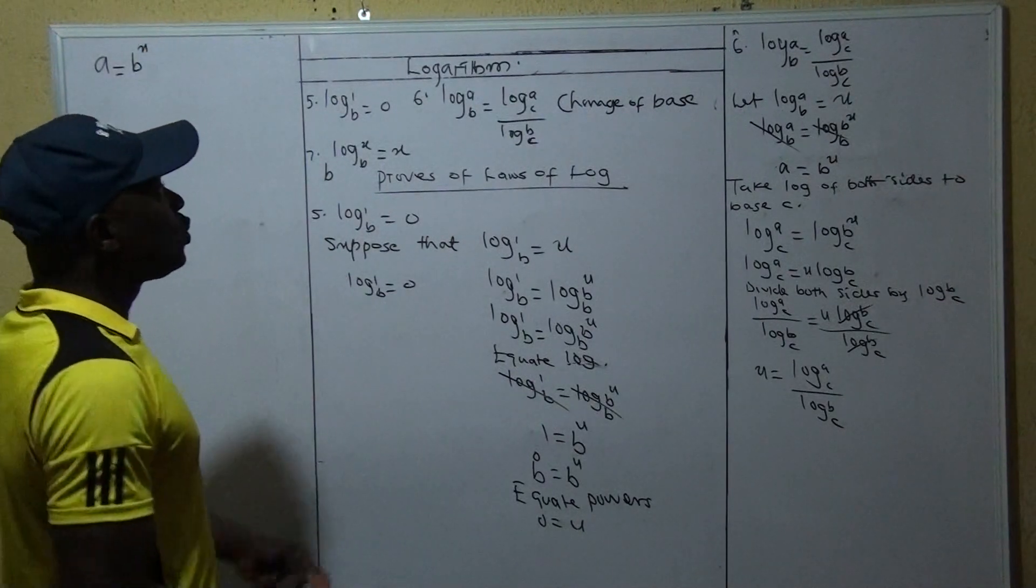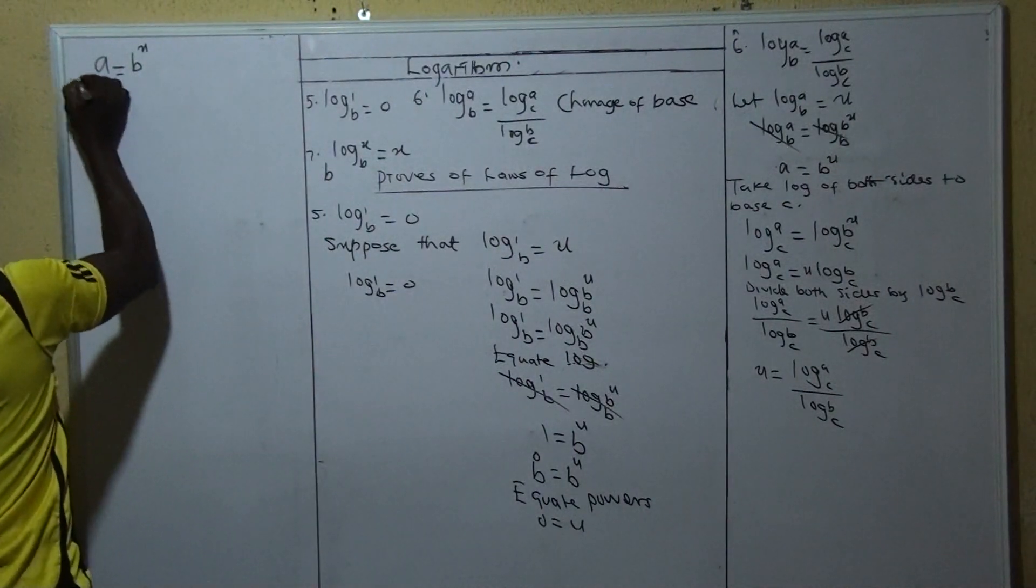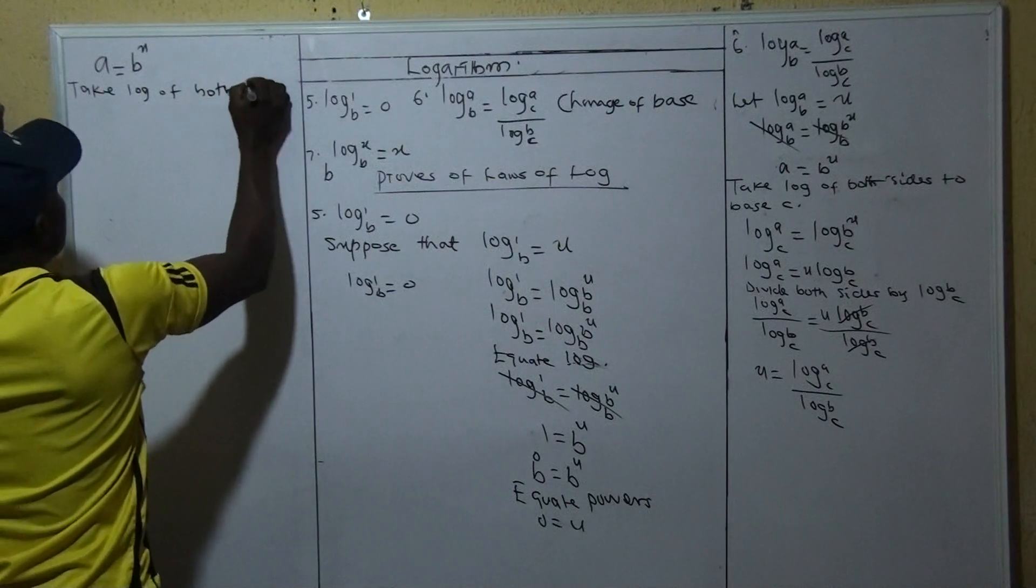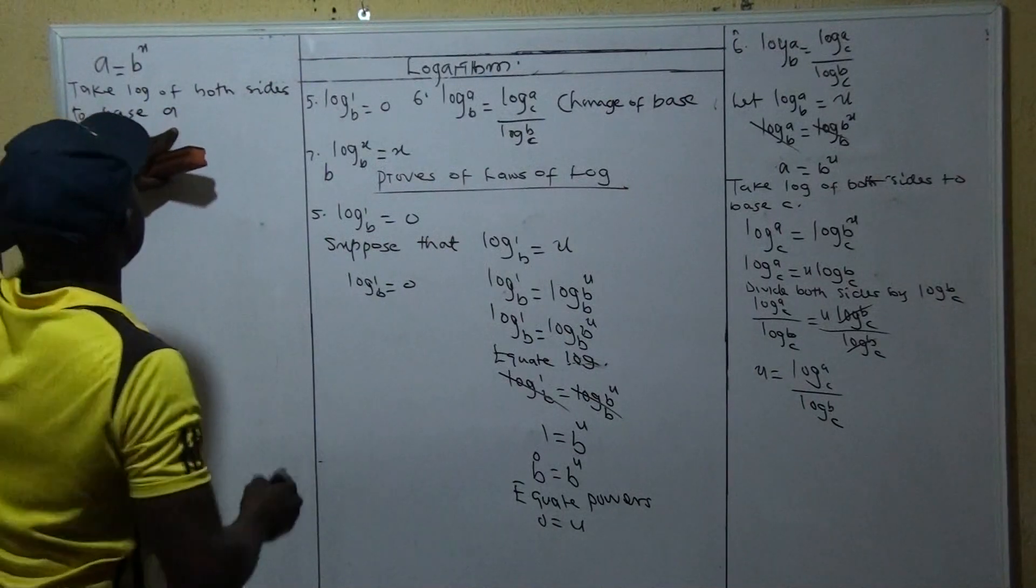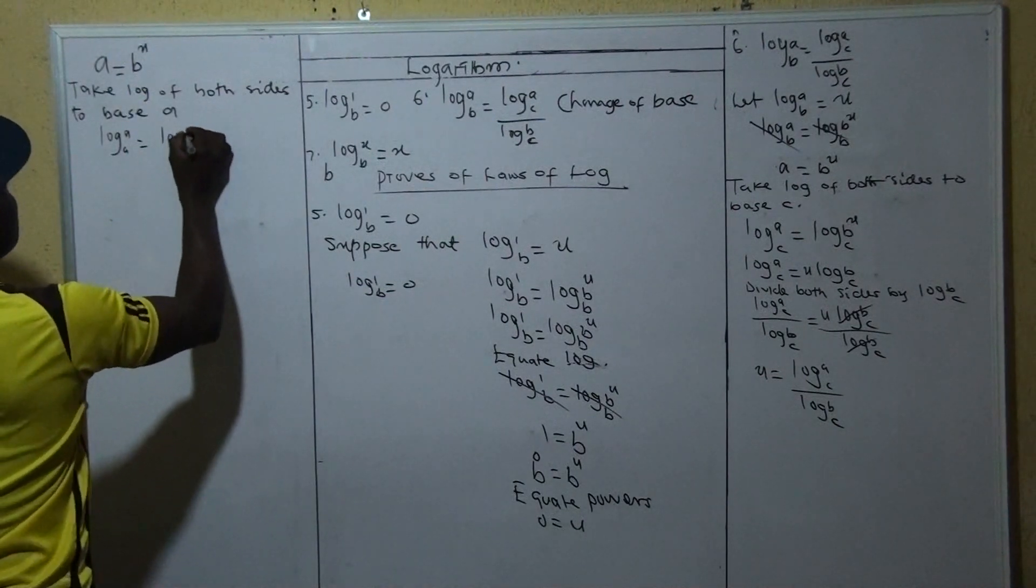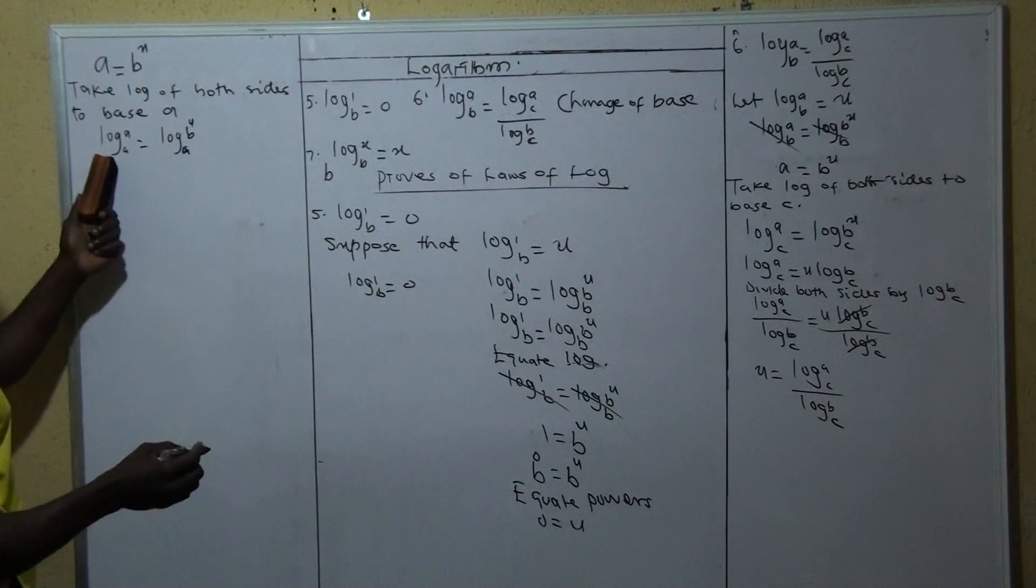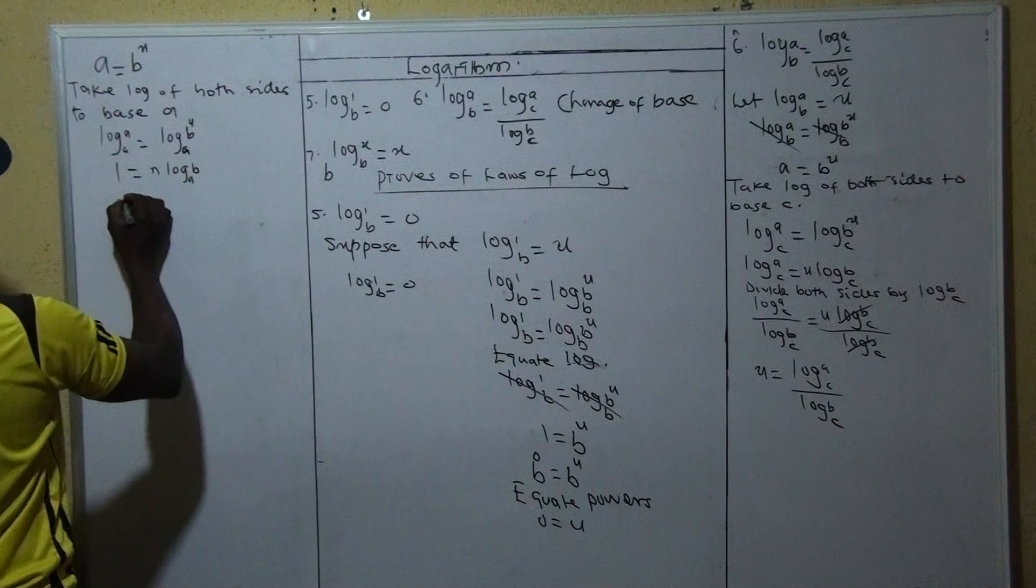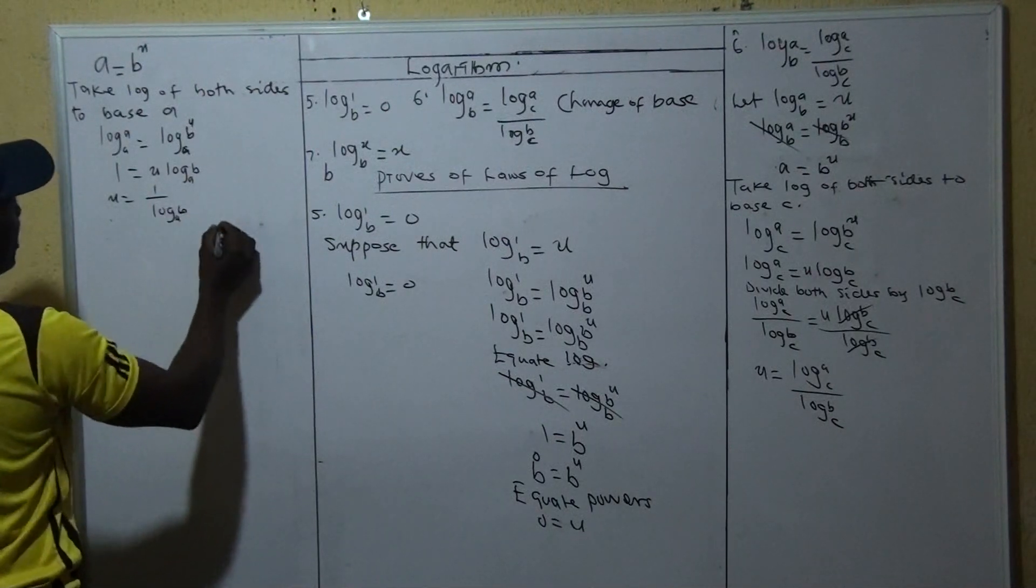And we want to change to one of them, one of the log B. So assume we want to change, take log of both sides to base A, assume we want to change it to base A. So here, now you're going to say this becomes log A to base A equals log B raise power U to base A. So here you see this place, since I've taken this one to be this, it becomes one, it's equal to this, we call U log B to base A.